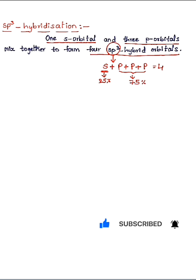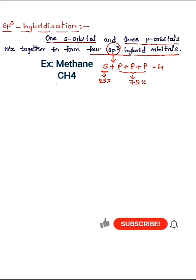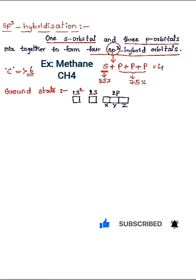Now let's see how one s orbital and three p orbitals combine together to form sp3 hybridization. As an example, consider sp3 hybridization of the carbon atom in methane. In methane, the central atom is carbon with atomic number six.